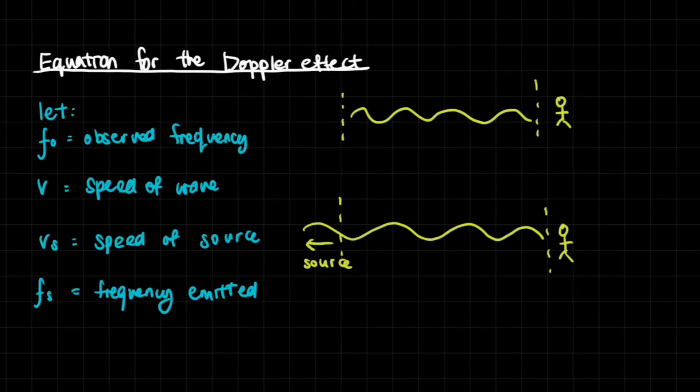So that's a pretty simple concept. Now let's learn about how to make it into an equation. F_O is going to be observed frequency. V is going to represent the speed of the wave, in this case the sound wave.